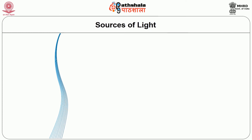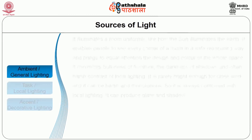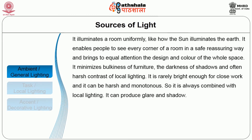The first type based on purpose and effect is ambient or general lighting. It illuminates the room uniformly like how the sun illuminates the earth. It enables people to see every corner of a room in a safe, reassuring way and brings equal attention to the design and colour of the whole space. It minimizes bulkiness of furniture, darkness of shadows and harsh contrasts of local lighting. However, it is rarely bright enough for close work and can be harsh and monotonous, so it is always combined with local lighting. It can also produce glare and shadow.